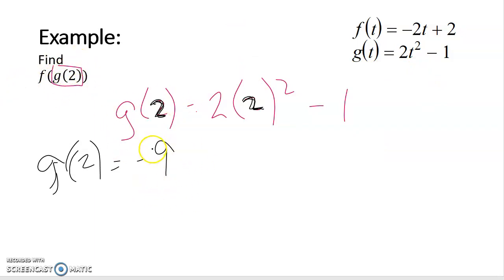Well we know that g of 2 is negative 9, so now all I need to find is f at negative 9. So we use our equation that's named f and everywhere we see a variable we put a negative 9.